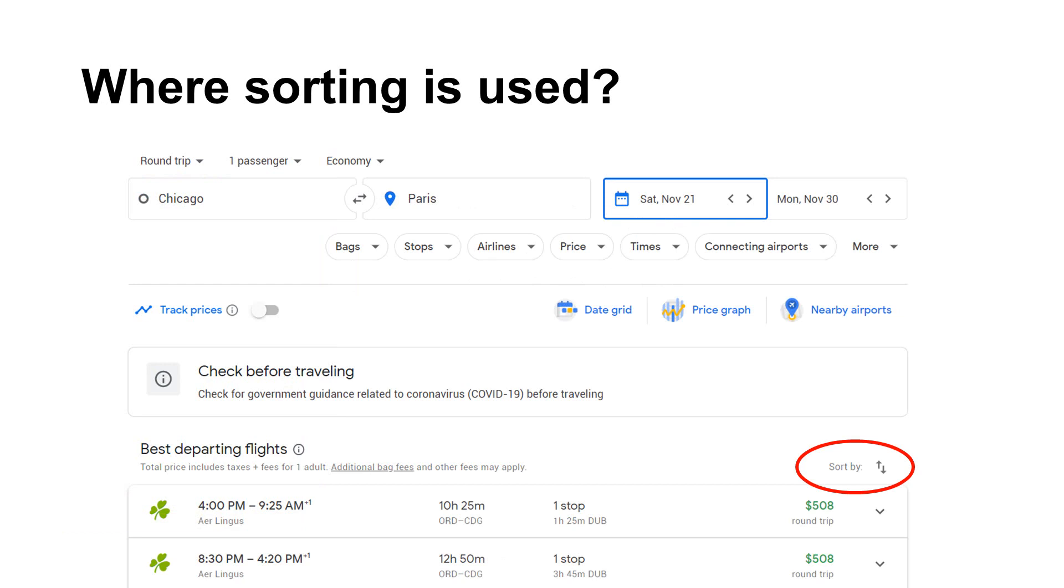Sorting is used widely in our everyday life. Imagine that you want to find airplane tickets to Paris. Travel websites have options to sort by the prices, travel time, layover time, and so on.